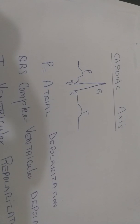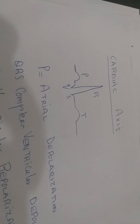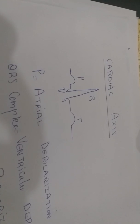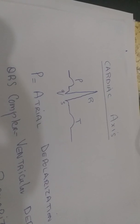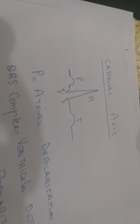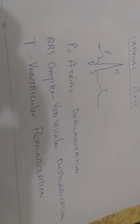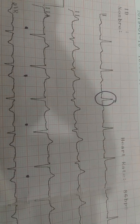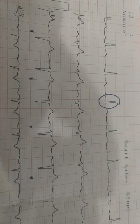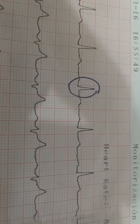Atrial repolarization is buried somewhere underneath the QRS complex, because atrial repolarization and ventricular depolarization happen simultaneously. So whenever we look at the ECG, we need to understand that it is the electrical representation of the heart on paper — the ECG paper or graph — showing the P wave, QRS complex, and T wave.